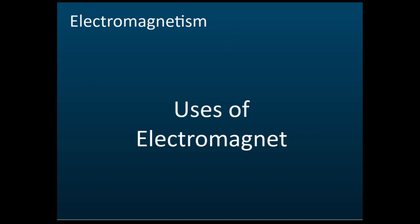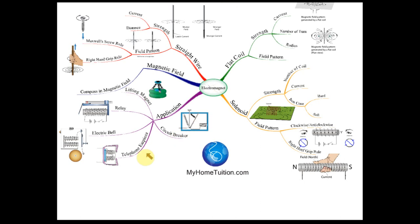For uses of electromagnets, you need to know circuit breaker, telephone earpiece, electric bell, relay, and lifting magnet. Lifting magnet is not given in the slide. A lifting magnet is used to lift used cars to make scrap iron. For example, if there is an old car with no use and you want to recycle the iron, you would use a lifting magnet to move it.